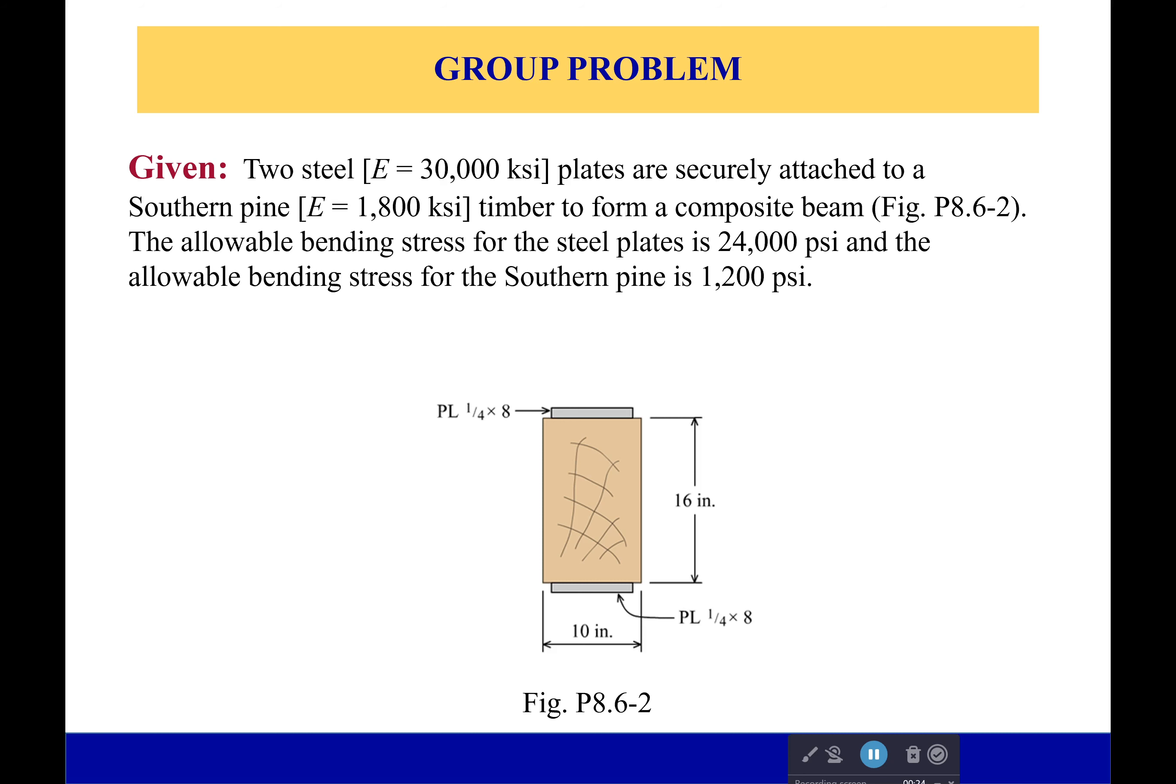The allowable bending stress for the steel plates is 24,000 PSI, and the allowable bending stress for the southern pine is 1,200 PSI. And our question then is, what's the maximum bending moment that can be applied about the horizontal axis of the beam?